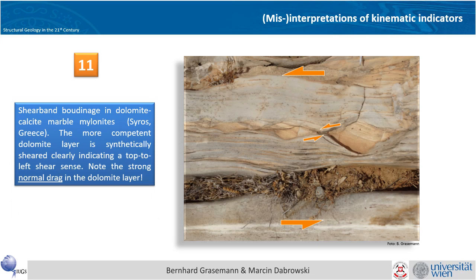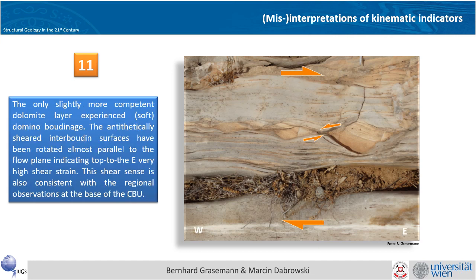Also the example from Syros was wrong. We know from Syros very well that the shear sense is not top to the left but top to the right, so these are not shear band boudinage — although they have this very nice sigmoidal shape foliation — but rather deformable boudinage, because the viscosity contrast between the dolomite and the calcite marble is not that high at this metamorphic condition, giving the impression of shear band boudinage when it's actually a deformable domino boudinage.